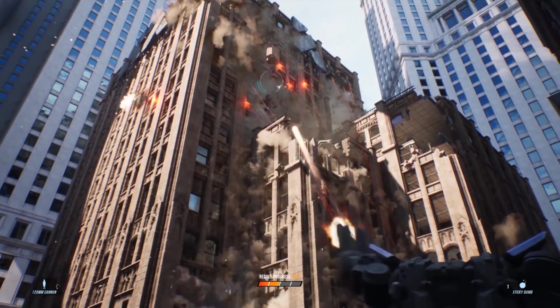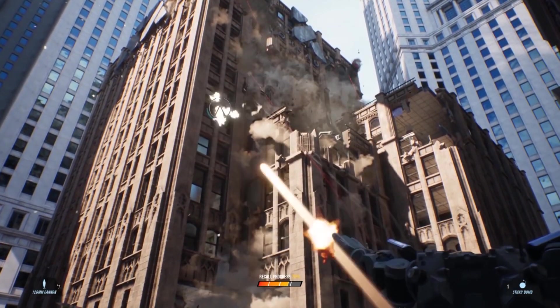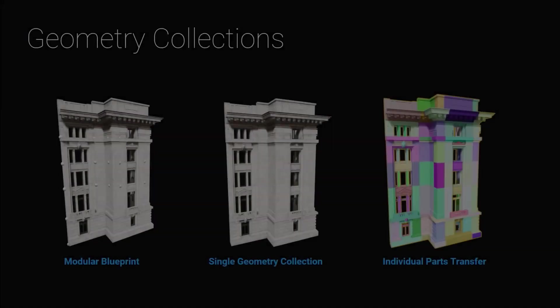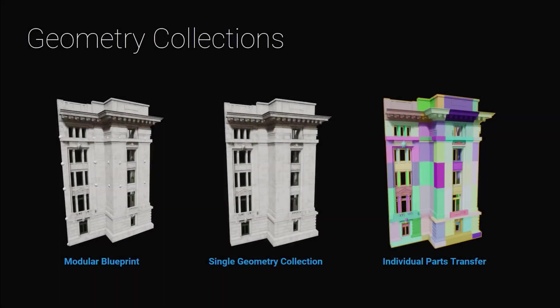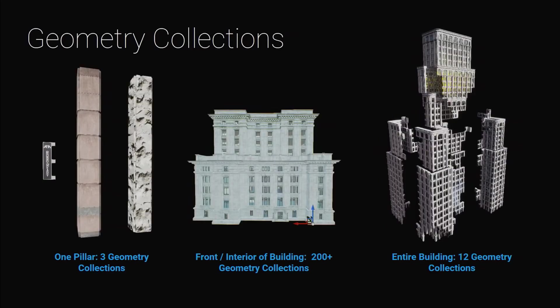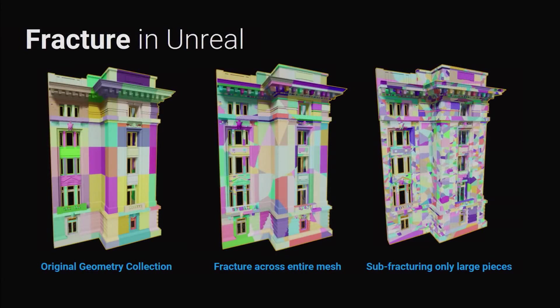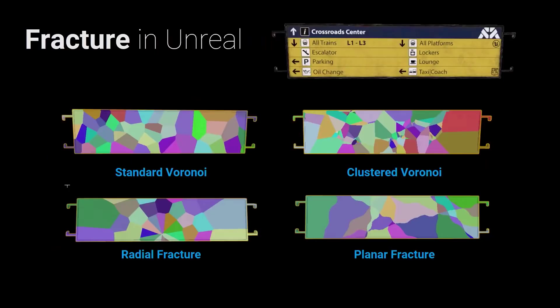Before we dive into a demonstration, let's explore the technology behind Chaos. Destruction within the Chaos system starts with a new kind of asset called a geometry collection. This is where the destructible piece, or pieces, are defined. Once you have your geometry collection, inside the Fracture Editor, you can choose the type of fracture to perform and the settings used to perform that fracture.